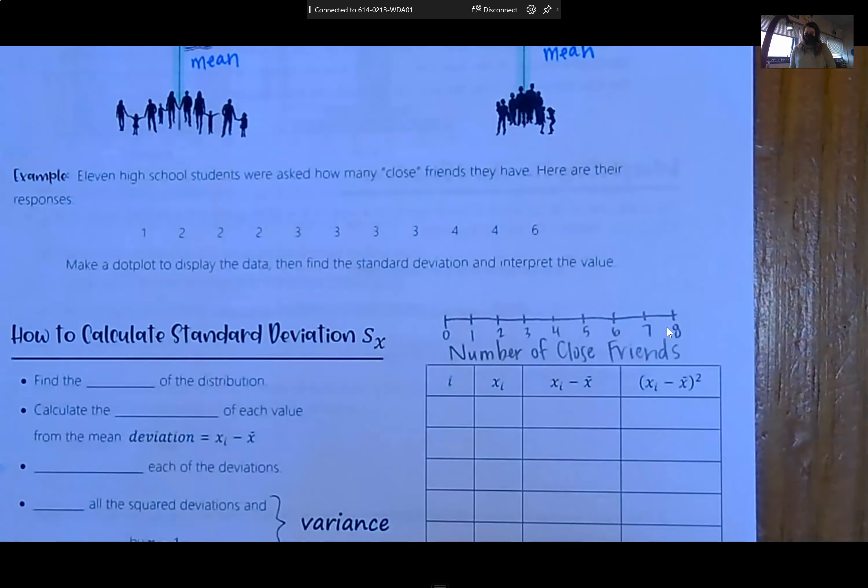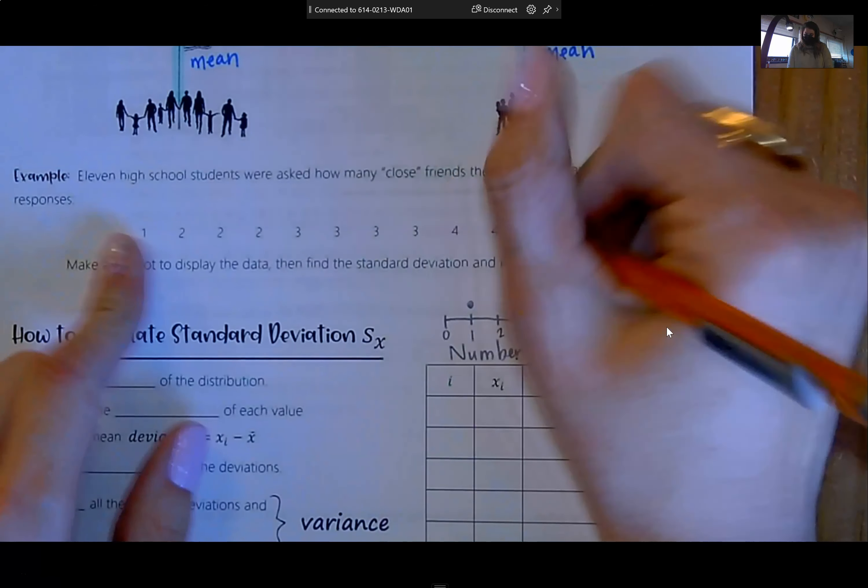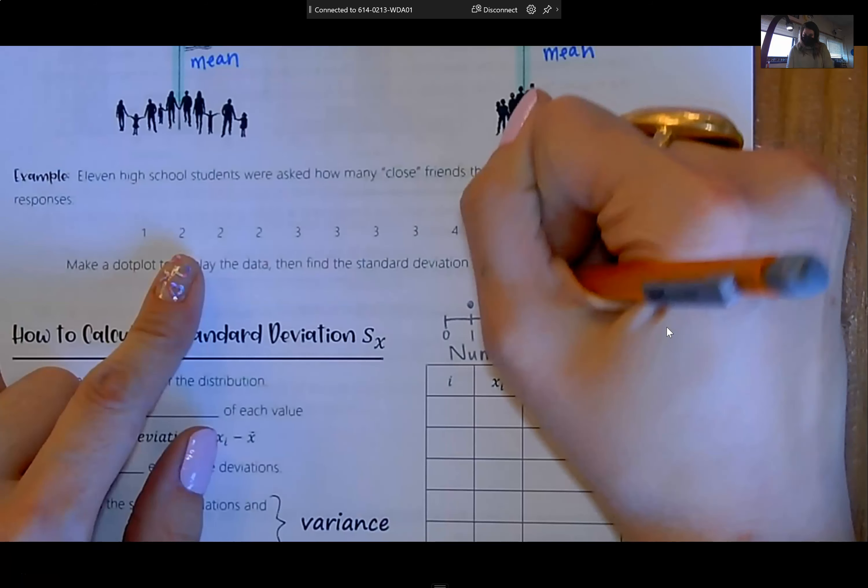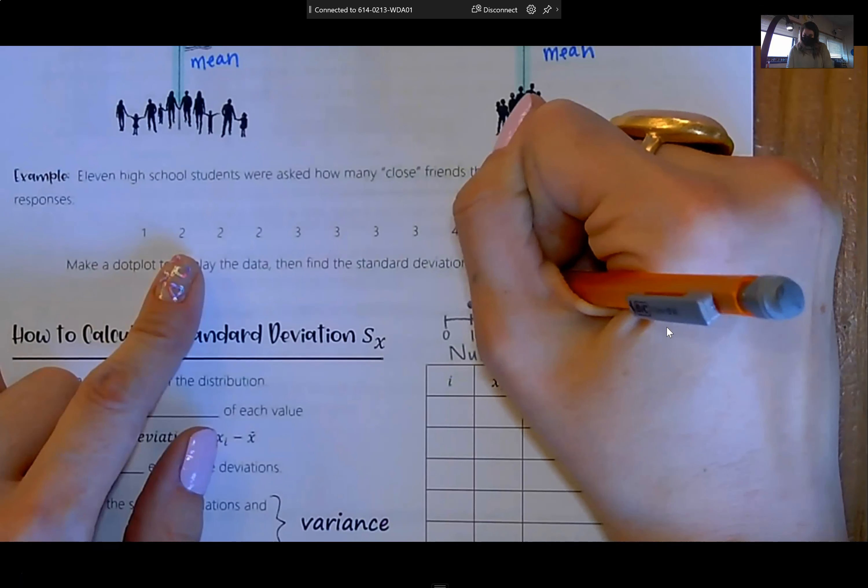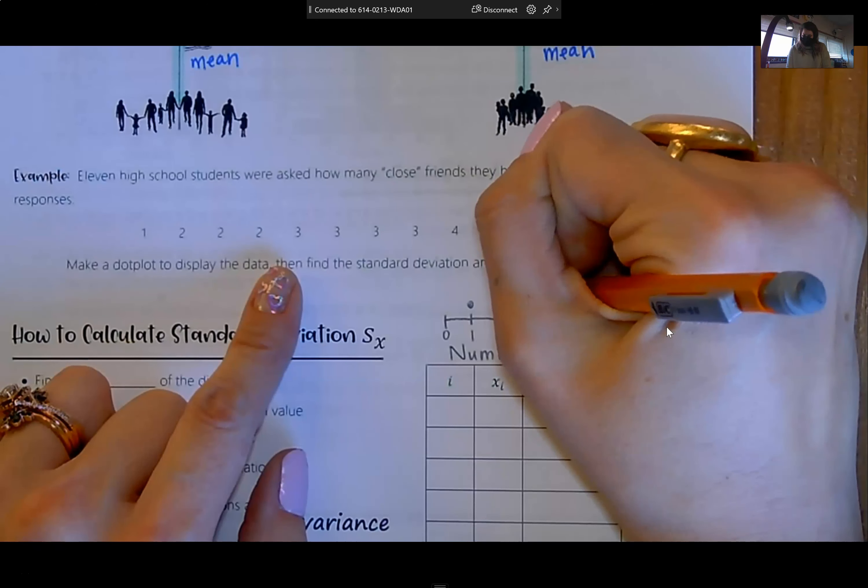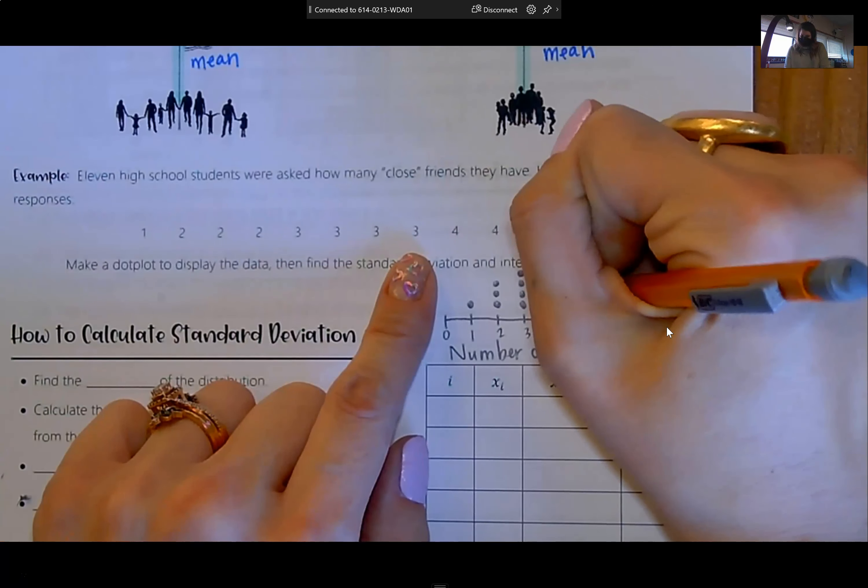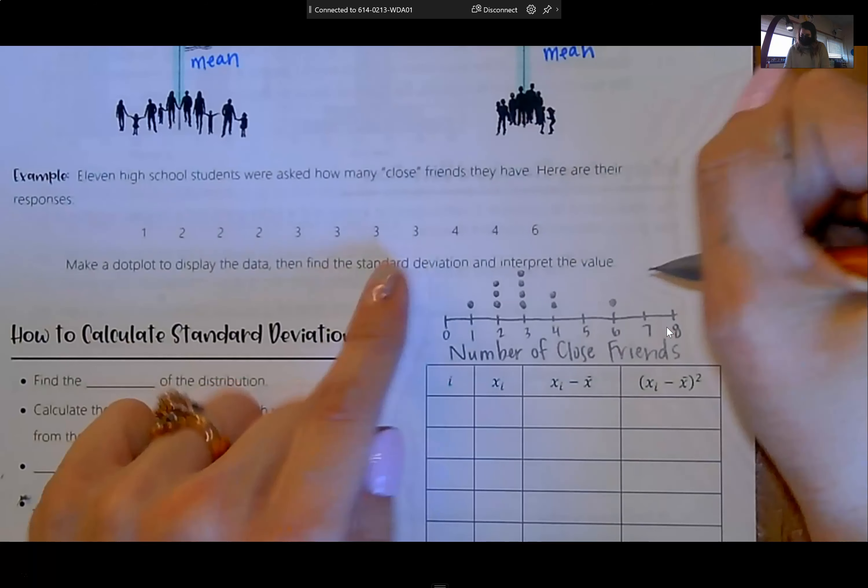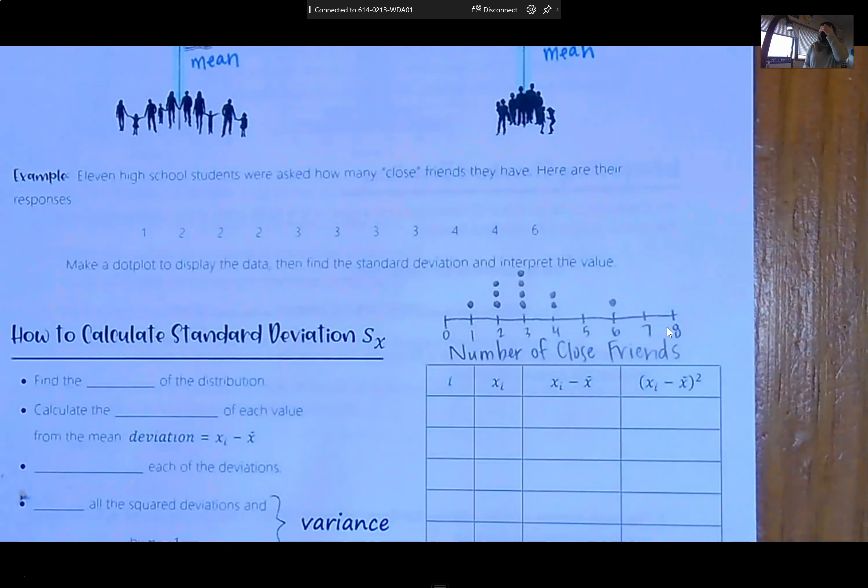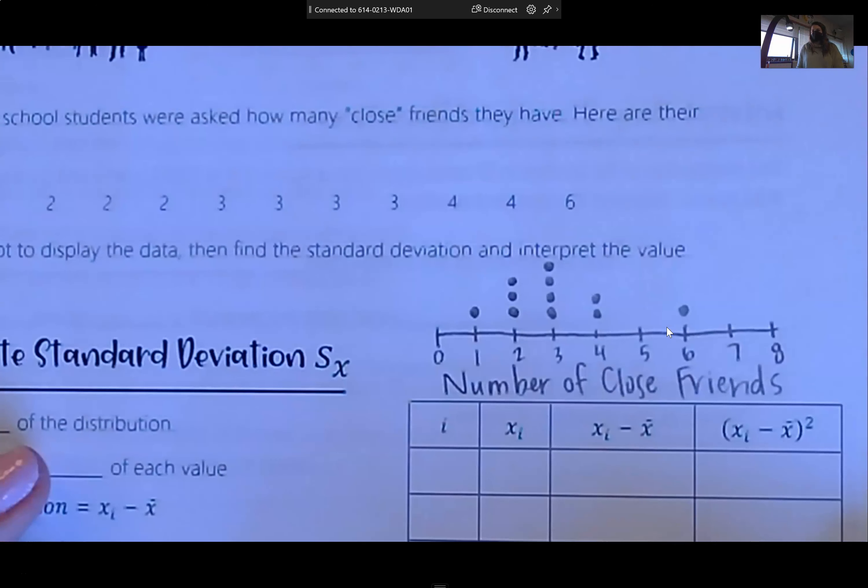So once we have our scale, we can put our dots down. Once you have it, it's approximately symmetric, maybe an outlier at 6. Having 6 close friends might be unusual. We have a peak at 3. So that was the most frequent answer.